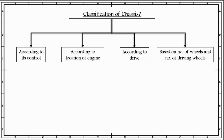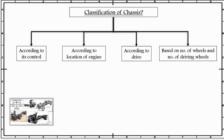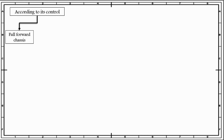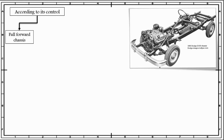Let us go with the first classification of chassis, which is according to its control. According to its control, chassis can be classified as full forward chassis. In this type, the engine is fitted in front of the driver's seat or in the driver's cabin. It is usually used in cars and old models of Tata trucks. Since the driver sits behind the engine, the driver cannot see the road just in front of the front wheel. Hence, a slope is provided at the mudguard and bonnet so that the driver can see close to the wheels as far as possible. Also, passengers or goods cannot be carried in the portion of the chassis where the engine is fitted. An example of full forward chassis is shown in this figure — the engine part is fitted in front of the driver compartment and the driver is seated behind it.